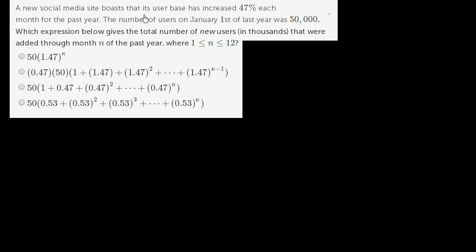A new social media site boasts that its user base has increased 47% each month for the past year. The number of users on January 1st of last year was 50,000. Which expression gives the total number of new users in thousands that were added through month N of the past year, where 1 ≤ N ≤ 12? Pause this video and try to think about which expression gives that value.